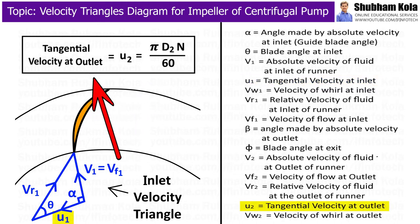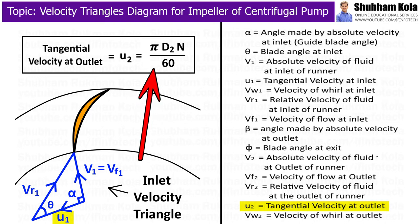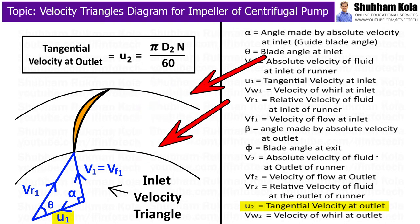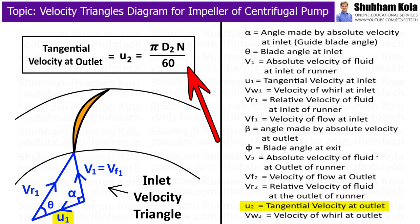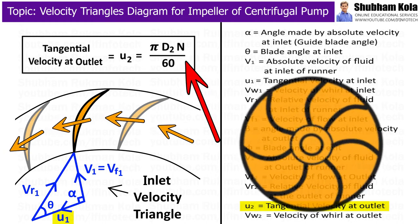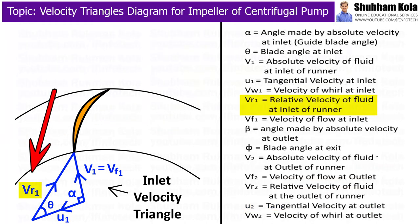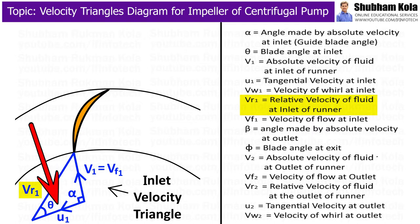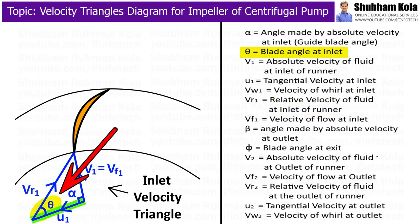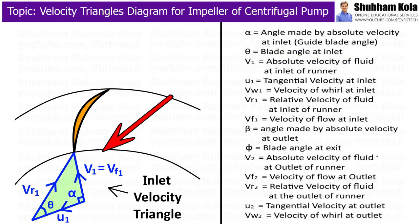Similarly, the tangential velocity at outlet, also known as velocity of blade at outlet, is denoted as U2, which can be written as π·d2·N divided by 60. Here, d1 and d2 are the diameters of the impeller at inlet and outlet respectively, and N is the rotational speed of the impeller in RPM. The relative velocity of fluid at inlet is Vr1, meaning the velocity of the jet with respect to the velocity of the blade. The velocity of jet is V1 and velocity of blade is U1. The angle of the relative velocity line with the line of velocity of blade is known as angle θ. This completes the inlet velocity triangle for the impeller.